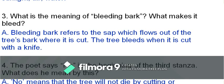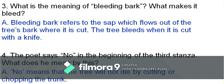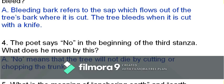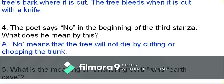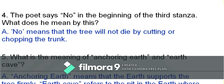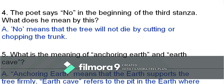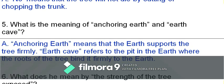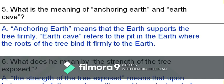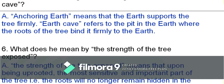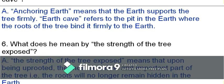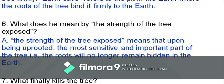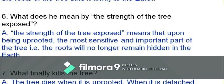Words suggestive of the tree's life and activity: consuming the earth, rising out of it, feeding upon its crust, absorbing years of sunlight, air, and water. Question: What is the meaning of 'bleeding bark'? What makes it bleed? Answer: 'Bleeding bark' refers to the sap which flows out of the tree's bark when it is cut. Question: What does 'no' mean at the beginning of the third stanza? Answer: It means the tree will not die by cutting or chopping the trunk.